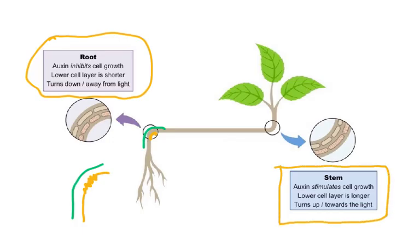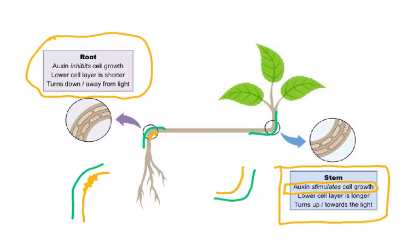In the stem, it's something different: auxin stimulates cell growth. So the lower layer is longer. Auxin stimulates cell growth in stems, so the lower layer is longer and the stem turns up towards light. In gravitropism: auxin in the root inhibits cell growth, while auxin stimulates cell growth in the stem — so the lower layer is longer and turns up towards light.